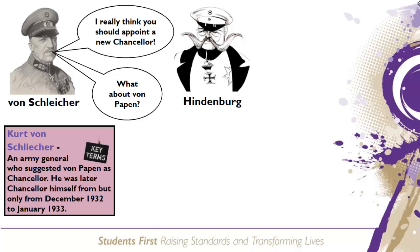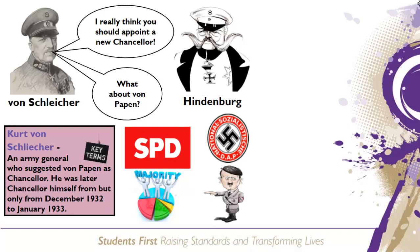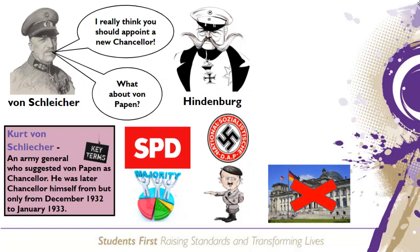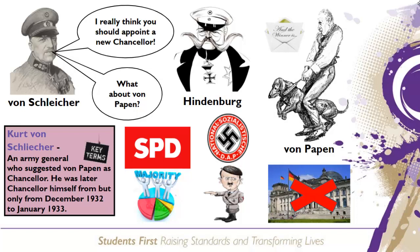At this point, Hindenburg was persuaded by high-ranking army general Kurt von Schleicher to appoint a new chancellor. Von Schleicher had been organising a coalition of right-wing supporters consisting of landowners, industrialists, and army officers, and he suggested to Hindenburg that ex-general Franz von Papen, a friend of Hindenburg's, should be given the role of chancellor. This group did not have majority support in the Reichstag. Von Schleicher suggested to Hindenburg that if they could persuade the Nazi party to join this coalition, they would be able to govern without the Reichstag and just use Article 48 — this went completely against the spirit of the Weimar Republic. Von Papen therefore became chancellor on the 30th of May 1932.